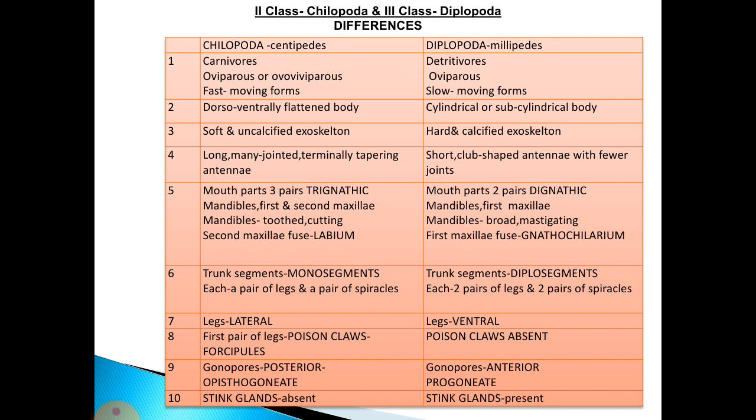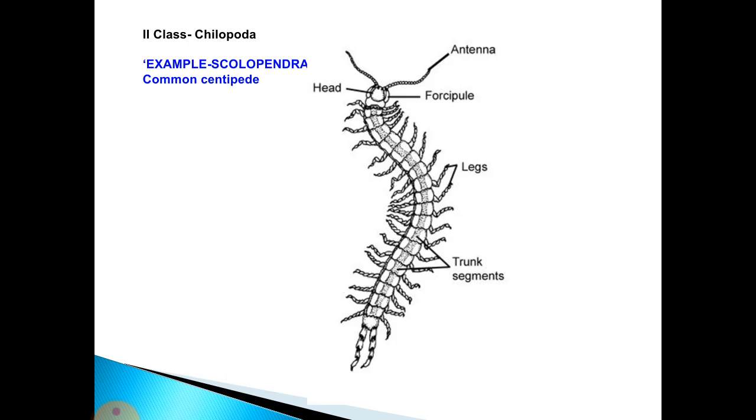The gonopores are posterior in Chilopoda, a condition known as opisthogonate. In Diplopoda the gonopores are anterior, a condition known as progonate. Sting glands are absent in centipedes, whereas sting glands are present in Diplopoda.